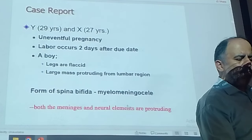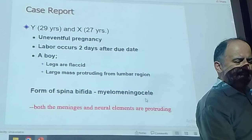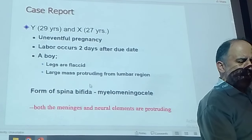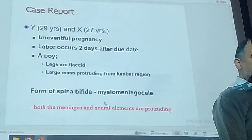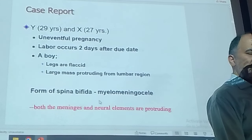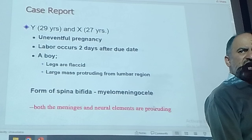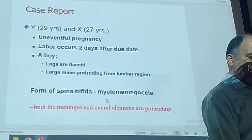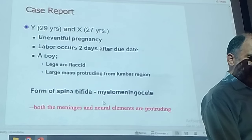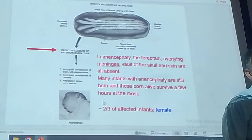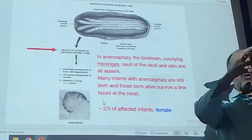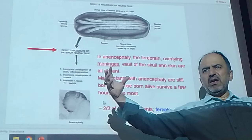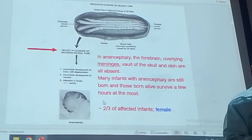Spina bifida means the spinal cord was not closed properly — bifida means open. We say myelomeningocele: 'cele' means mass, 'meningo' means meninges, and the neural tissue is there as well. Sometimes we say meningocele — without the myelo — it would be only the meninges and the mass. Here we have neural tube defect. The neural tube, when properly closed, is fine. If it is not closed, there will be problems.